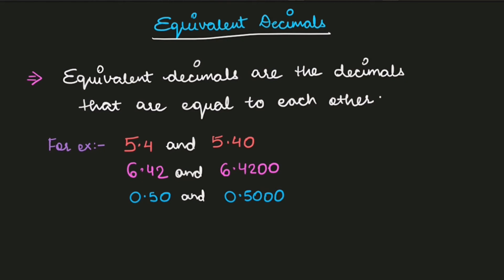Please remember this and don't get confused if you get this type of decimal and are asked whether they are equal or not — yes, they are equal. Now let me give a few more examples. If I change the decimal a little bit, like 5.04 and 5.40 — now they are different, because I added a zero before the 4 in the decimal part, which creates a new decimal value.